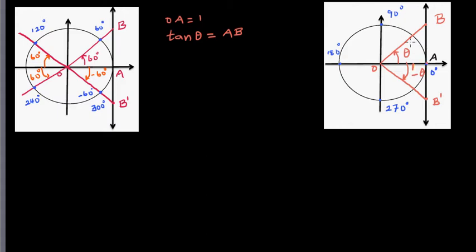When a particle moves from A to point P through an angle theta, if you join that point with the center and extend it, the length you get on the tangent line is always tan θ. This is by definition, and I also used similar triangles to show why AB equals tan θ.